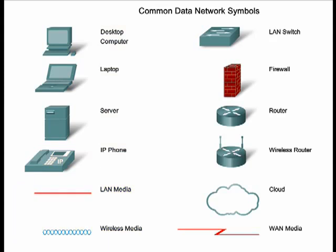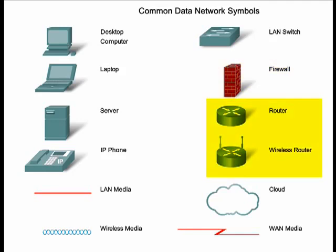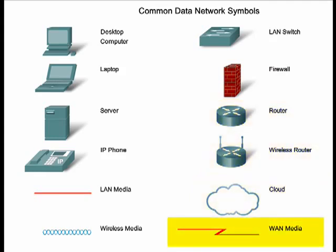This graphic also shows some of the most common intermediate devices that are used to direct and manage messages as they move through the network. Some common intermediary devices include a LAN switch, which is the most common device for interconnecting local networks; a firewall, which provides security to networks; routers and wireless routers, which are devices used to direct messages as they travel across the network; a cloud, used to summarize a group of networking devices; and a serial link, which represents wide area networks or WAN interconnections between two local area networks.